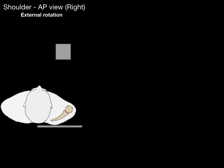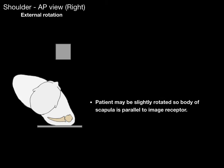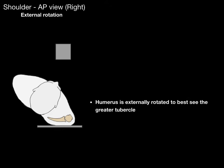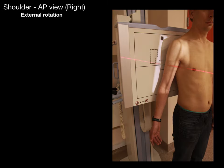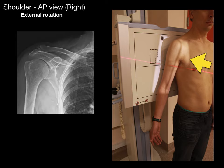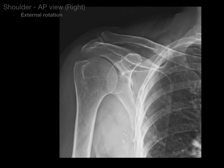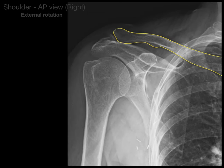Let's start with the shoulder AP view of the right shoulder. The patient places their back against the image receptor, and may be slightly rotated so the body of the scapula is parallel to the image receptor. The humerus is externally rotated to best see the greater tubercle, and then we take the x-ray. The first bone to identify is the clavicle — the collarbone.